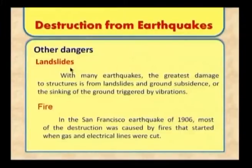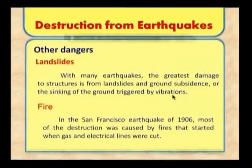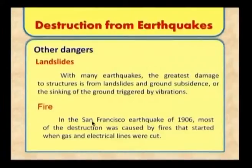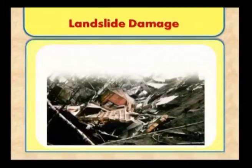Other destructions from earthquakes — not only tsunami, but also landslides. Most earthquakes cause the greatest damage through landslides and ground subsidence or sinking triggered by vibrations. Due to earthquakes, hilly areas can easily experience landslides. Also, fire — for example, in the San Francisco earthquake of 1906, most of the destruction was caused by fires that started when gas and electrical lines were cut. The diagram shows how land subsidence and landslides occur due to earthquakes.